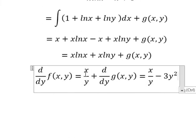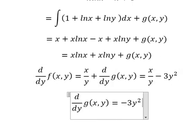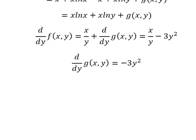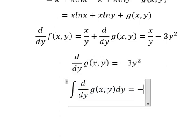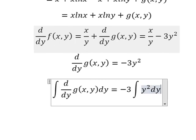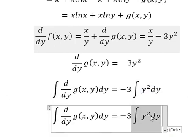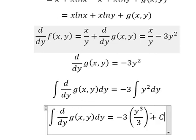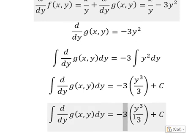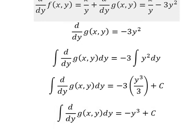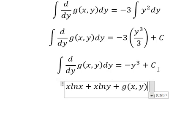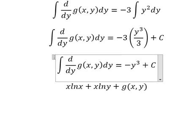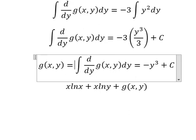Now we simplify x over y on both sides. Next, we put the integration on both sides. The integral of this gives y to the power of three over three. This one gives negative y to the power of three. Now going back, the integral gives g(x,y), so g(x,y) equals this expression.